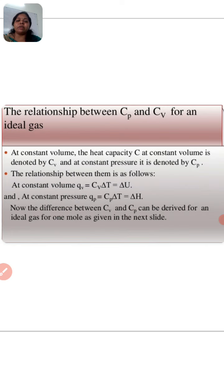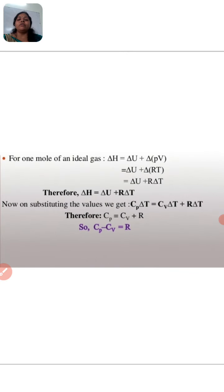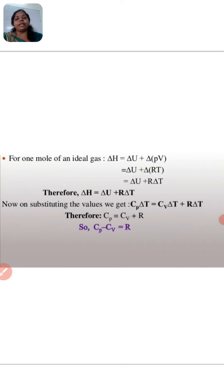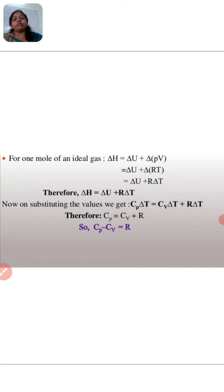The difference between CV and CP can be derived for an ideal gas for one mole. For one mole of an ideal gas, ΔH equals ΔU plus Δ(PV), and ΔU equals ΔU plus ΔRT. So ΔH equals ΔU plus R·ΔT. Substituting the values, we get CP·ΔT equals CV·ΔT plus R·ΔT, therefore CP equals CV plus R.